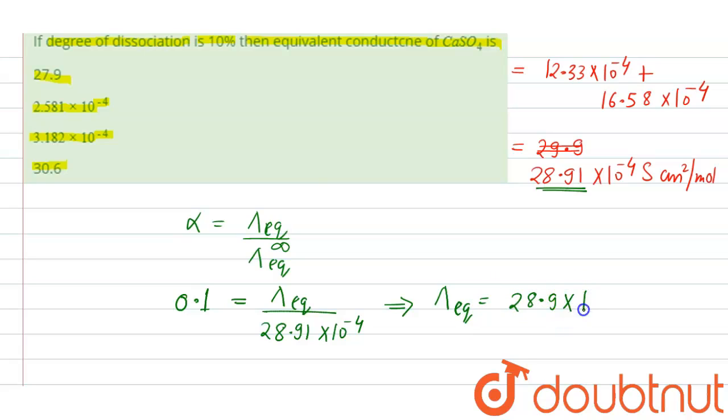times 10 raised to the power minus 4 into 0.1. That means 2.891, approximately 2.5 into 10 raised to the power minus 4. So the second option is the correct option. Hope you understand the concept, thank you.